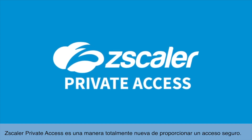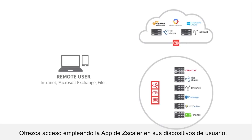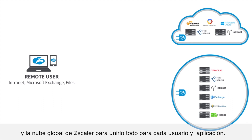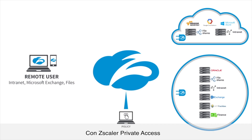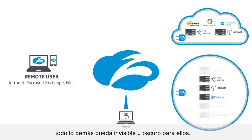Zscaler Private Access is a completely new way to deliver secure access, providing access using the Zscaler app on your user devices, a very lightweight software connector in your data center, a central authority to push policy, and the global Zscaler cloud to stitch it all together on a per-user, per-application basis. With Zscaler Private Access, users can only see the specific applications that you've allowed by policy. Everything else is invisible or dark to them.